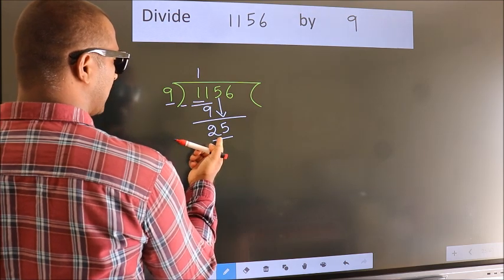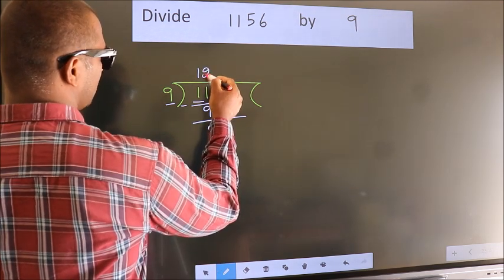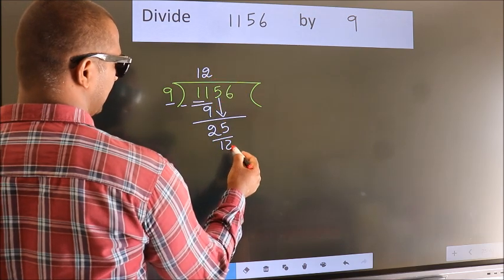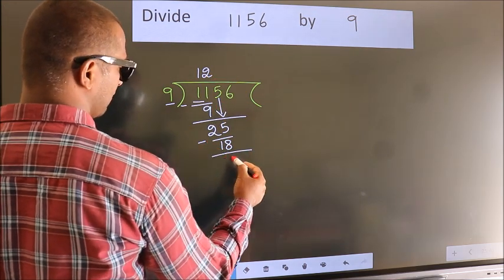A number close to 25 in 9 table is 9 2s 18. Now we subtract. We get 7.